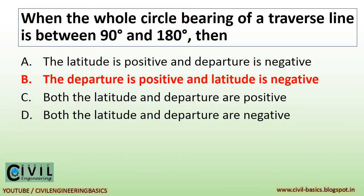When the whole circle bearing of a traverse line is between 90 degrees and 180 degrees, then the departure is positive and latitude is negative.